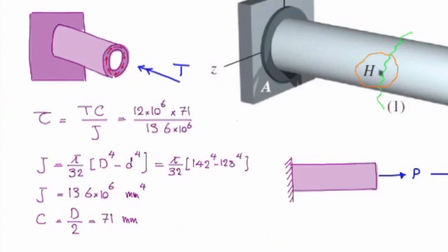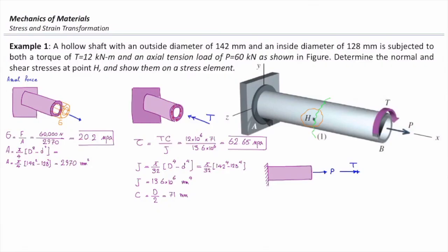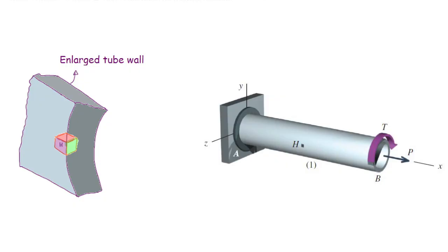Shear stress at that point would be 62.65. Now let me show all of this at the same time at that point. This is what we call it stress element. Let me take out part of that tube, and this is point H.